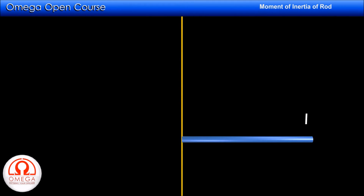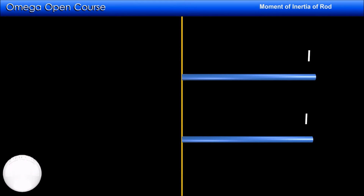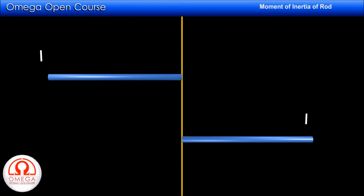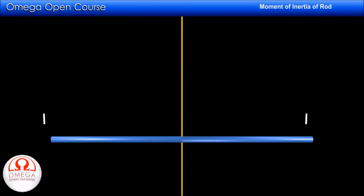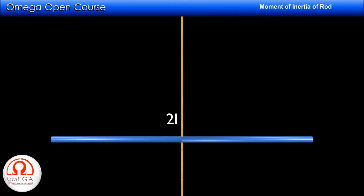Now let us bring another identical rod. The moment of inertia of both rods combined is 2I. Let us rotate the second rod to orient it opposite to the first rod — this rotation will not change its moment of inertia, so the combined moment of inertia is still 2I. Now bring this rod down to put it end to end with the first rod; the moment of inertia is still 2I. What we now have is a rod of length 2L and mass 2M.